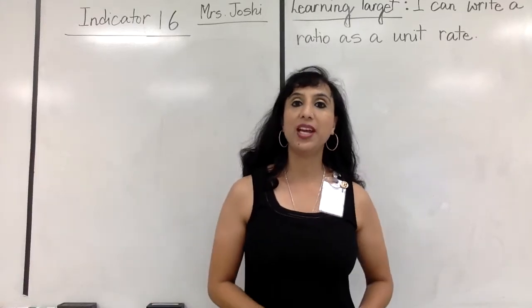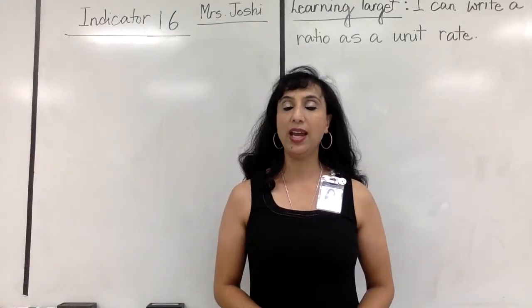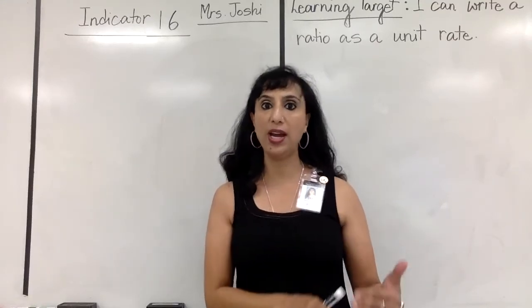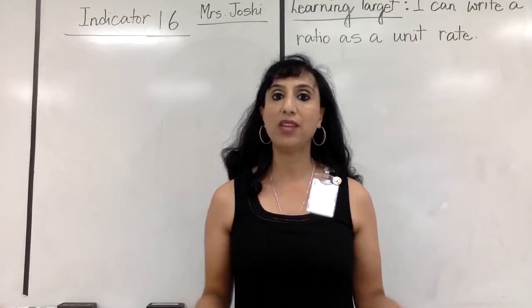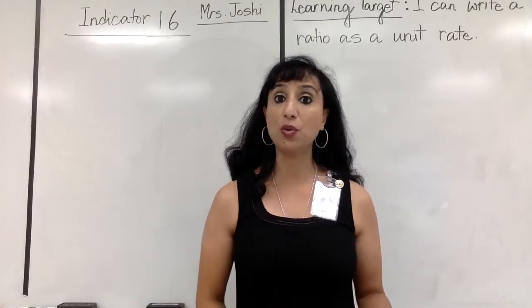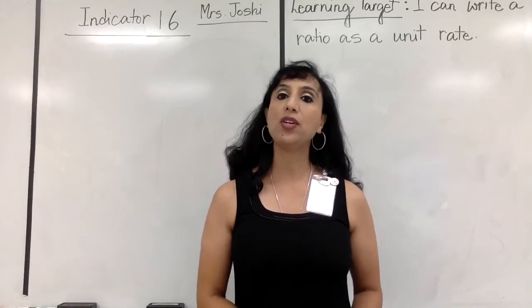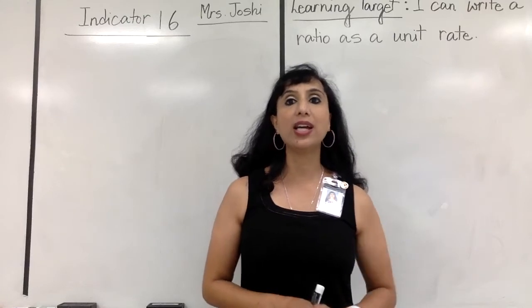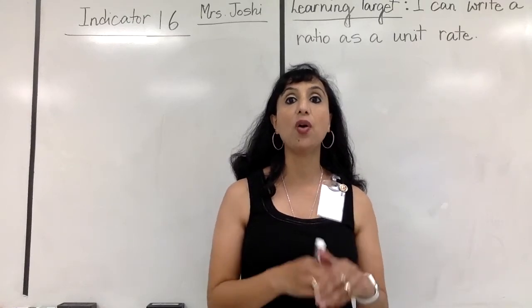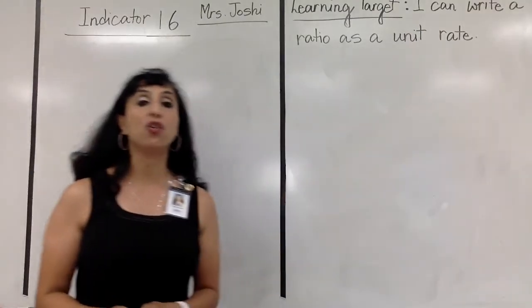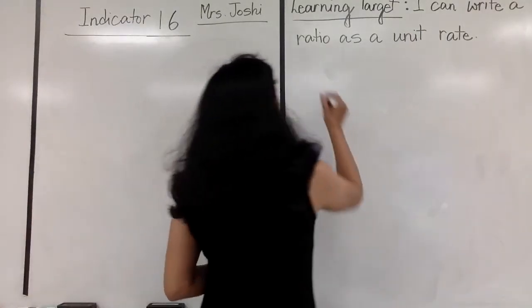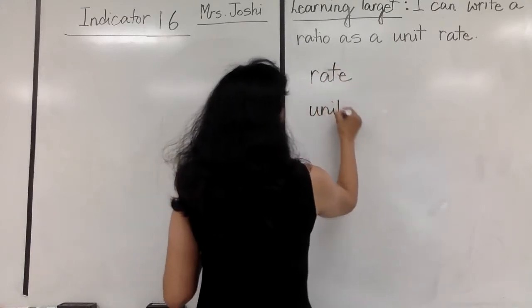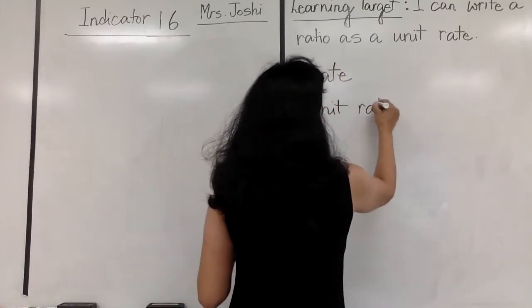Indicator 16 - this one goes further than ratio. We had done that in the earlier indicator where we said ratio is a comparison of two quantities using division. Now we are going to talk about rate. The learning target: I can write a ratio as a unit rate. Our vocabulary includes rate and unit rate.